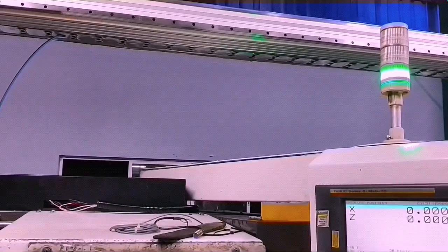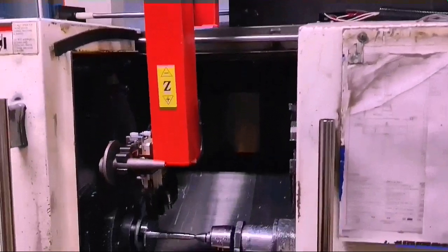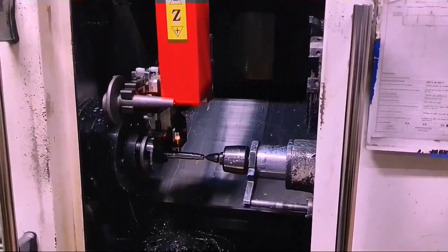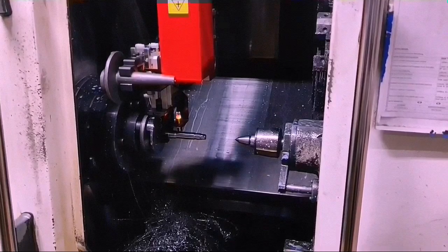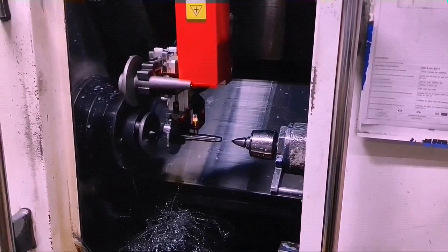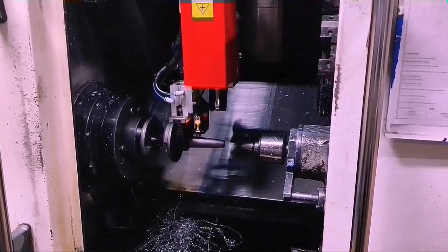When tray 1 is complete, tray 2 moves to loading zone while tray 1 comes to unloading zone. The operator unloads finished components from tray 1 and loads raw components into tray 1 and the cycle continues.